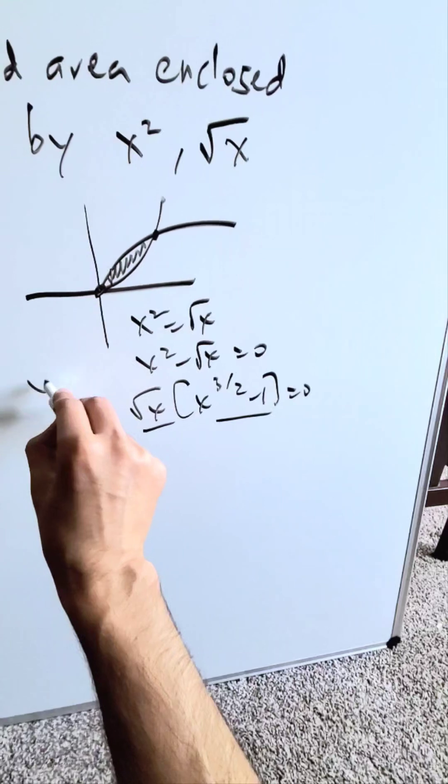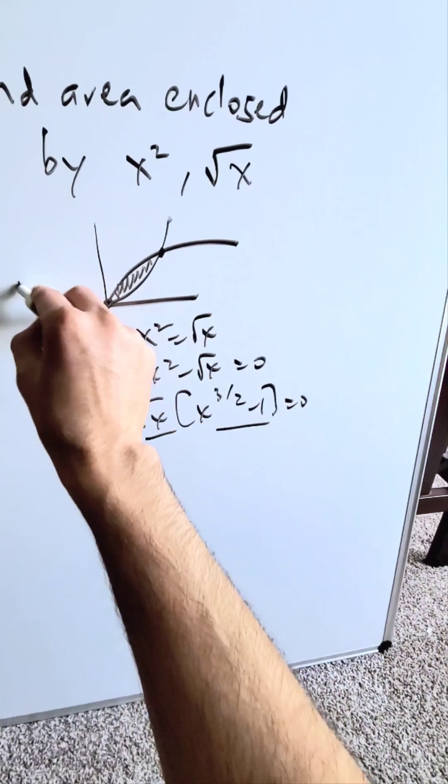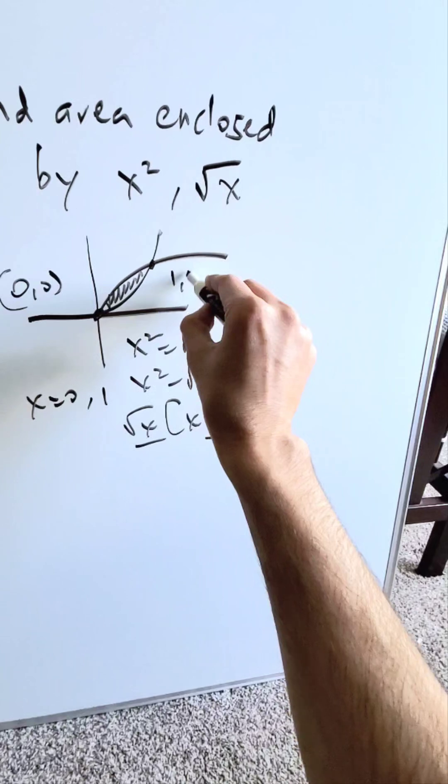Solve for x in both cases. x here equals 0 and 1. Put 0 and 1 in the original functions. You have (0,0) and (1,1).